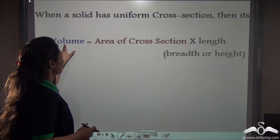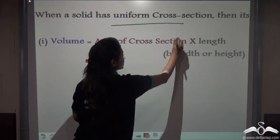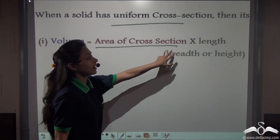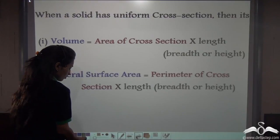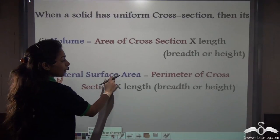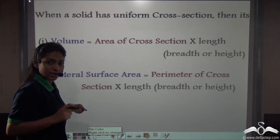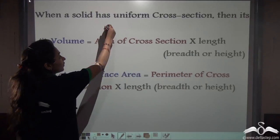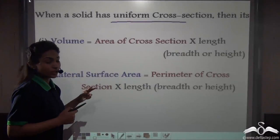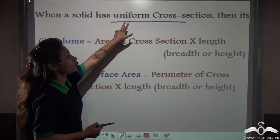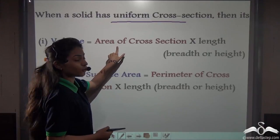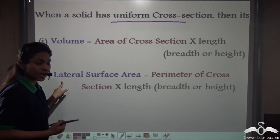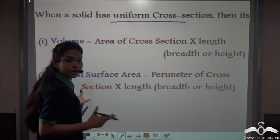Remember that you can find the volume of those solids which have a uniform cross-section by this method: volume = area of cross-section × length, breadth, or height, whichever is given. The lateral surface area can also be calculated by: lateral surface area = perimeter of the cross-section × length, breadth, or height, whichever is given. These two formulas can be applied only to solids which have a uniform cross-section.